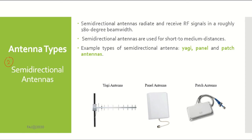Next, the semi-directional antenna. This type of antenna will radiate and receive RF signals in a roughly 180-degree beam width. It is suitable for short to medium distance use. Examples of semi-directional antennas are Yagi, panel, and patch antennas.